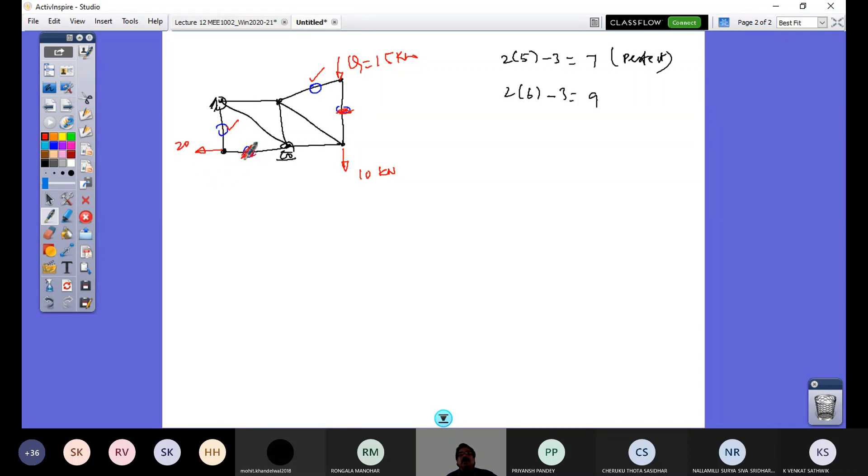So this is only zero force member and this becomes an active member. So initially I had four zero force members, now reduced by two zero force members because of introduction of Q load of 15 kilonewton and another load of 20 kilonewton to the left.